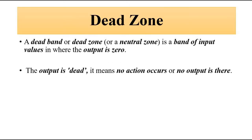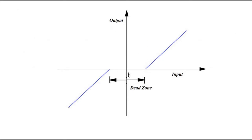Dead zone, also called dead band or neutral zone, is the range or set of input values where the output is zero — no meter movement, no change, no scale reading. On an input-output relationship plot, from a starting point to another point there is no output. If we consider the negative direction as well, from that point to this point there is also zero output. This is called the dead zone or dead band.